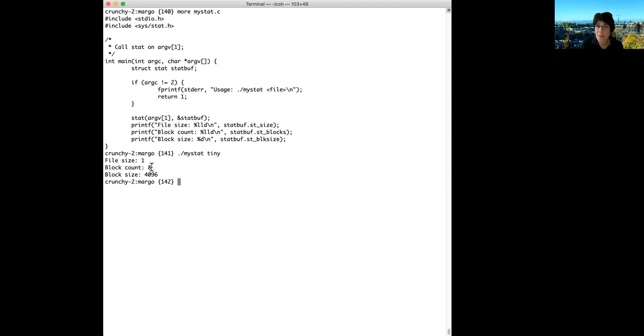Stat is going to return this block count in units of 512 bytes. You might say, why 512 bytes, that's a really weird number. The reason is really historical. Disks used to have 512 byte sectors, and that was true for about 30 years. It was very common that when we talk about file systems, many things were described in terms of sectors that were 512 bytes.